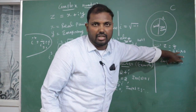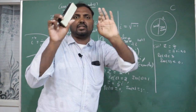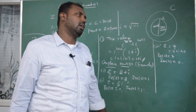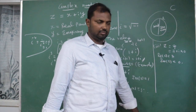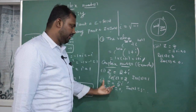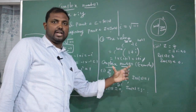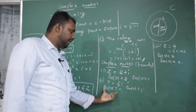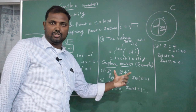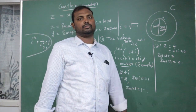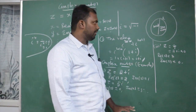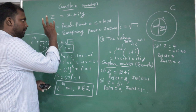If the imaginary part of Z is zero, it is purely real. If the real part of Z is zero, it is purely imaginary. This is very important.